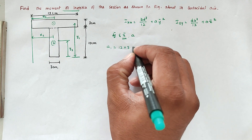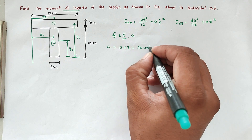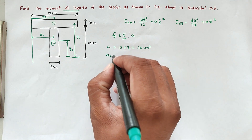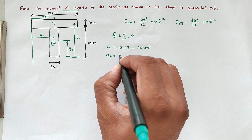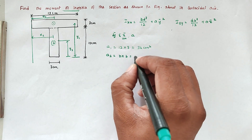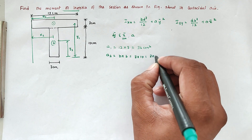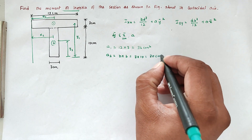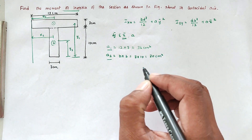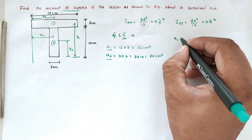Now we find the areas. A1 equals b into d, that is 12 cm × 3 cm, giving A1 = 36 cm². Then A2 equals b into d, that is 3 × 10, giving A2 = 30 cm².